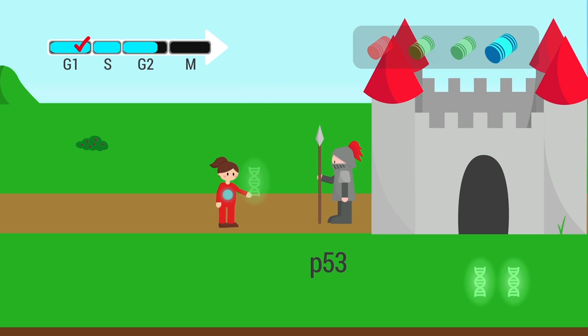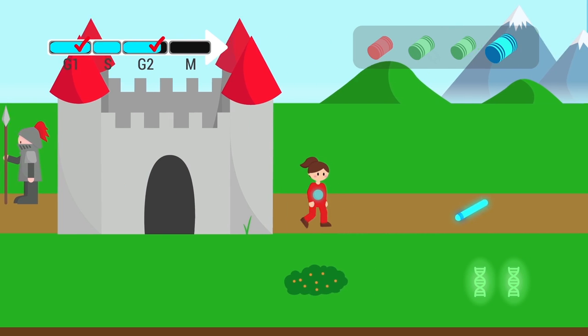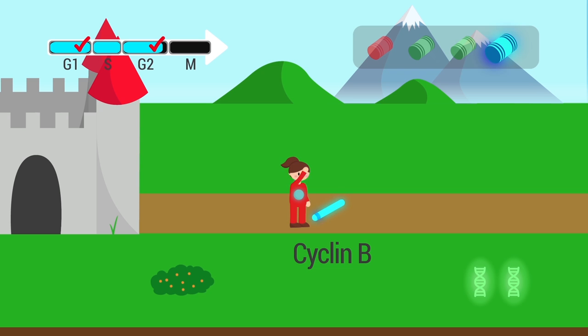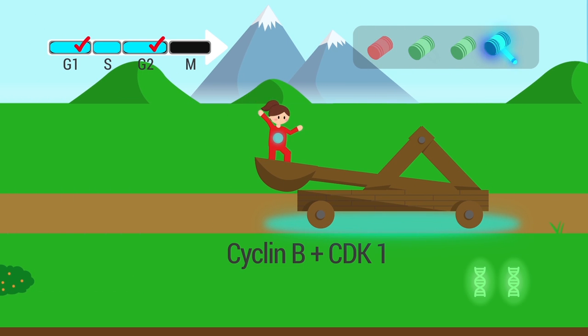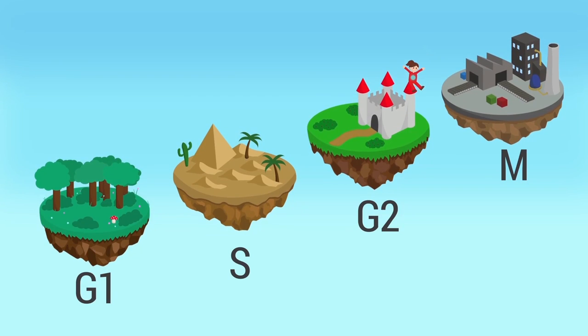If there is no DNA damage or it can be repaired, the cycle continues. At the end of G2, cyclin B and its corresponding kinase, CDK1, form an active complex that allows the cell to enter M phase, or mitosis, the final phase of the cell cycle.